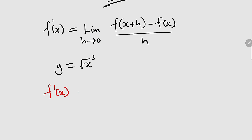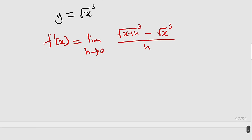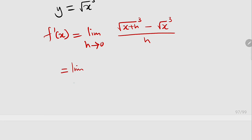Therefore, f prime of x will be equal to the limit as h approaches 0 of f of x plus h. All we have to do is replace x with x plus h. So instead of square root of x to the power of 3, we are going to have square root of x plus h all to the power of 3, then minus f of x, which is the original function, square root of x to the power of 3, divided by h. From here, we cannot directly substitute h equal to 0, because if we do so, the whole expression will be undefined. Therefore, let us go ahead and simplify this a little bit.